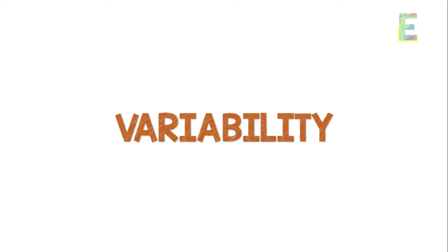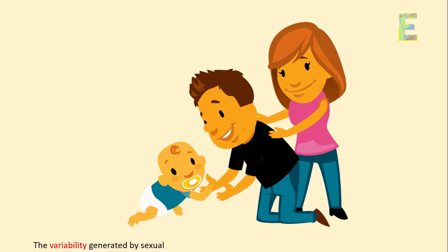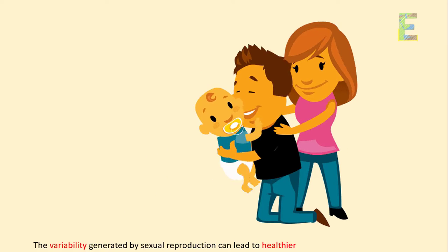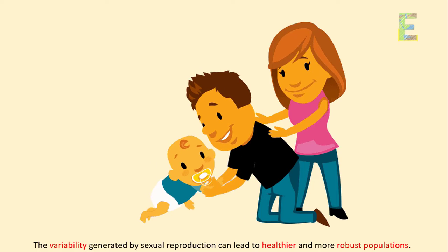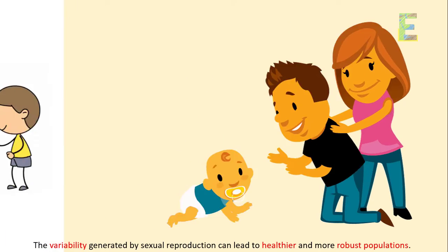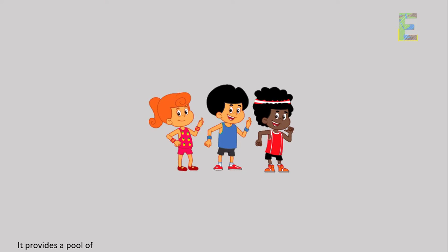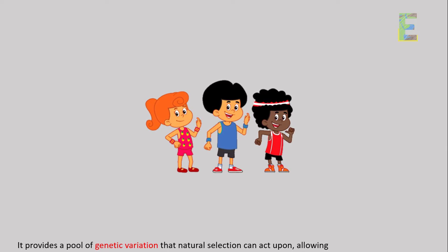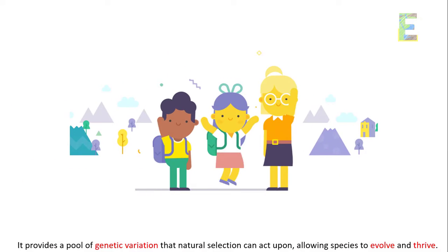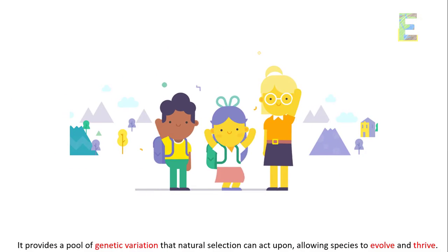Variability — the variability generated by sexual reproduction can lead to healthier and more robust populations. It provides a pool of genetic variation that natural selection can act upon, allowing species to evolve and thrive.